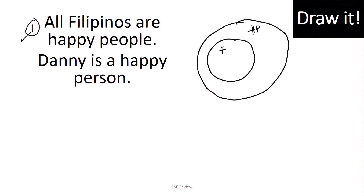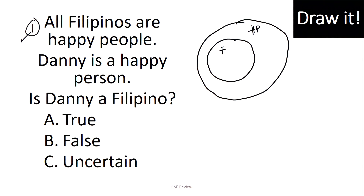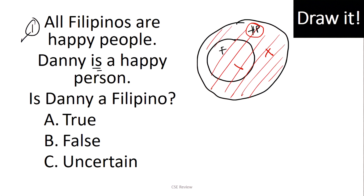The question is: Is Danny a Filipino? True, false, or uncertain? Danny is a happy person, so he's inside the happy people circle. Now, can you place him inside the inner Filipinos circle? Yes — if he's there, he's both Filipino and a happy person. But can he be outside that inner circle and still be a happy person? Yes! You can be happy without being Filipino. So Danny could be Filipino or he might not be. The answer is uncertain.